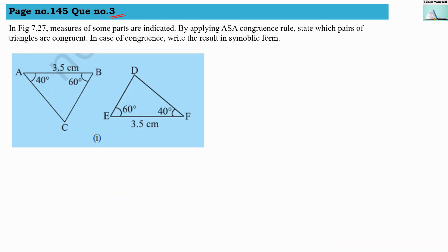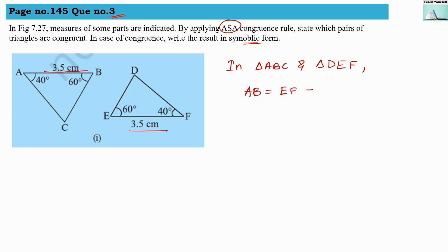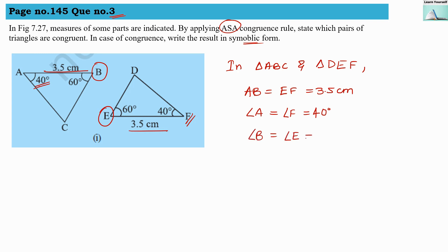Question number 3: In figure 7.27, measurements of some parts are indicated. Applying the ASA congruence rule, state which pairs of triangles are congruent and write the result in symbolic form. In triangle ABC and triangle DEF, we can see that AB equals EF — both are 3.5 cm. Angle A is 40° and angle F is 40°, so they are equal. Angle B and angle E are both 60°, so they are equal too.